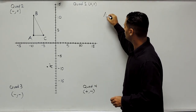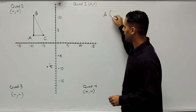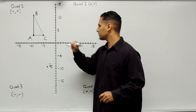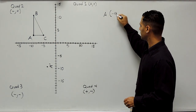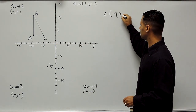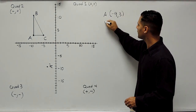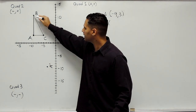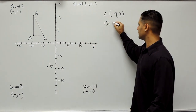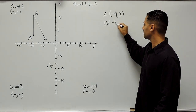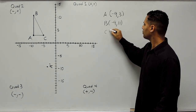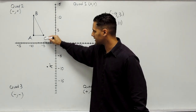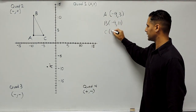Point A is located at negative 9, positive 3. Point B is located at negative 9, positive 11. Point C is currently located at negative 5, positive 3.